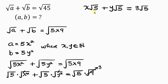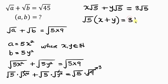Our next step is to factor out the square root of 5 from the left-hand side. Factoring out √5 gives us √5 times (x + y), equal to 3√5. Notice that √5 cancels, leaving behind x + y = 3.